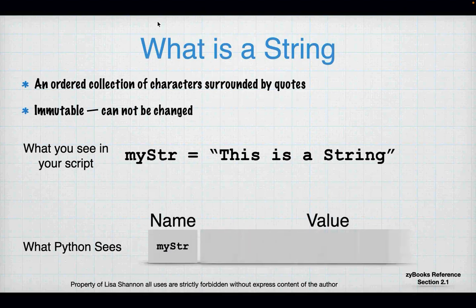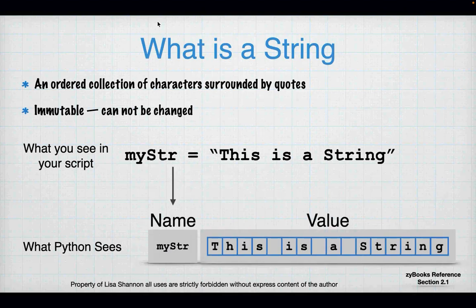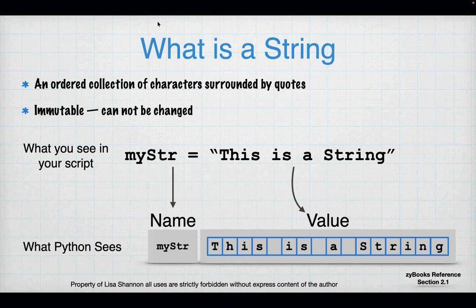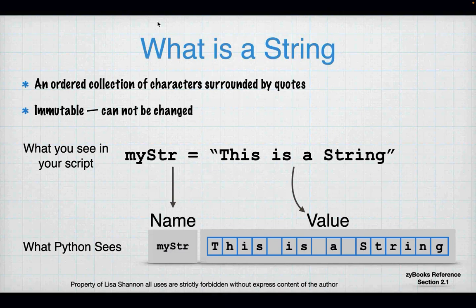So what does Python see? Python sees a variable name of Meister, and then it actually sees what we call a collection or a list. The collection is the individual characters — letters and spaces. Everything in a string has to be an element in that list or in that collection. It's important to look at a string like this because it will help you figure out how to modify or create a modified copy of the string later.